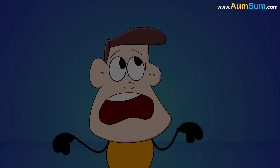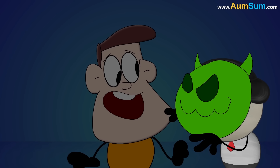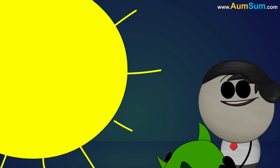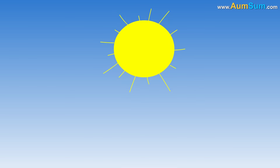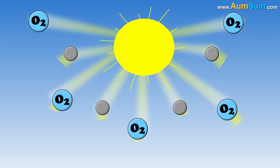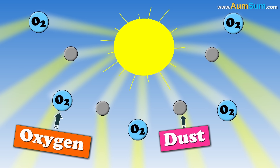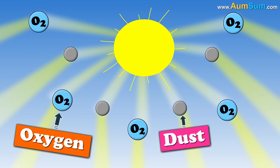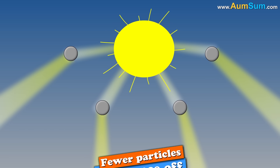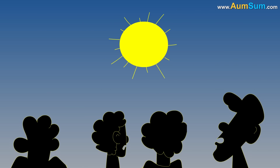It would also become darker suddenly. Why? For sunlight to reach us, it needs to bounce off air particles like oxygen, dust, etc. No oxygen means much fewer particles to bounce off. Thus, much darker.